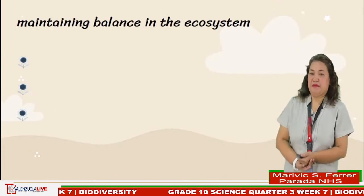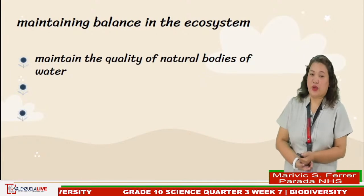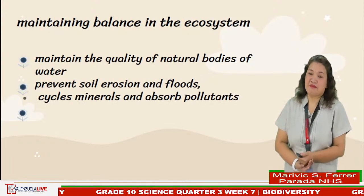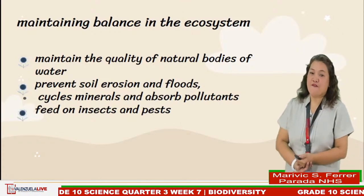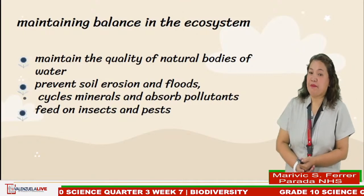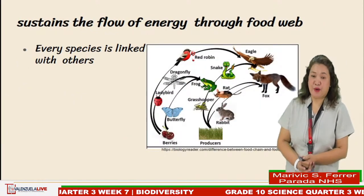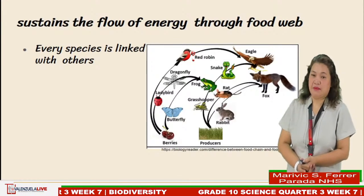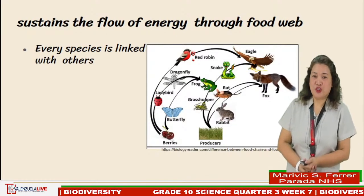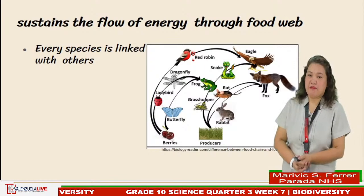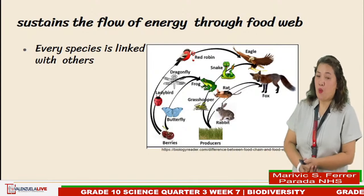Some species maintain the quality of natural bodies of water. Some prevent soil erosion and floods, cycle minerals in the soil, and absorb pollutants. Others feed on insects and pests, which could control the population of organisms in a certain environment, thus making the ecosystem balanced and stable. Biodiversity is very important because it sustains the flow of energy through a food web on Earth.